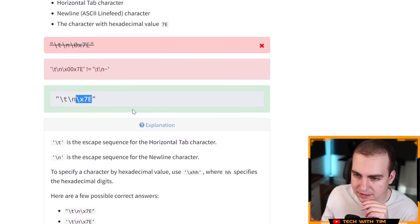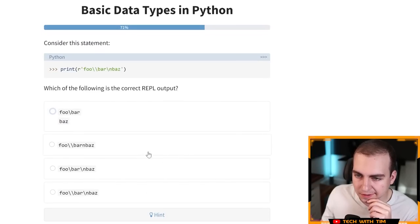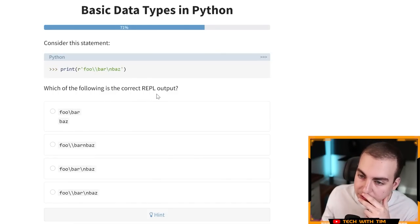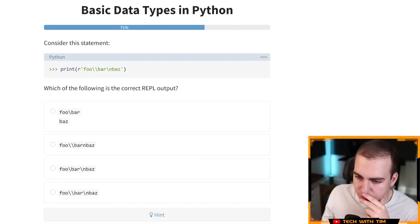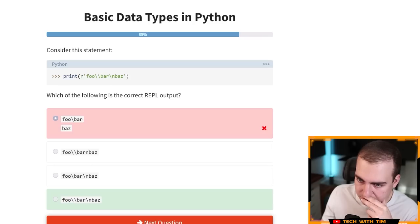You know what? I can live with that. I've never had to embed a hexadecimal character in a string before, so I'm fine with that. Okay. Next question. Consider the statement prints and then you have R foo backslash backslash bar backslash N baz. Okay. Which of the following is the correct REPL output? Oh my God. I don't even know what the R does when it, when it leads that. I have no clue what this would be. The backslash N should move it down though. So I think that's it really. Okay. So R I guess means ignore the backslash. Yeah. Okay. R I guess means you ignore any escape characters. That's, that's very strange. I've never seen that before. Okay.